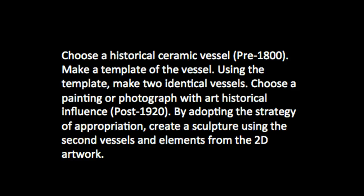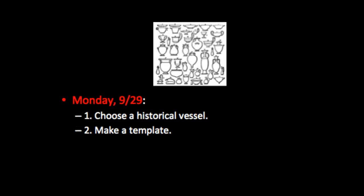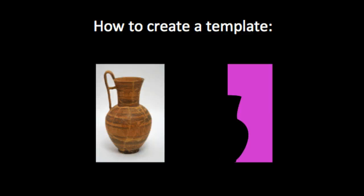So for Monday, September 29th, you will need to choose a historic vessel and upload an image of it to Canvas, and then make a cardboard template. To create a template, draw out the silhouette of your vessel — I would recommend an 8-inch or 10-inch height, since the project should be no taller than 12 inches total. Then cut your drawing in half vertically. Next, cut the positive shape of the vessel away from the cardboard. You will be left with half of the negative shape of the vessel. Your cardboard should look something like this pink shape that you can see on the screen.